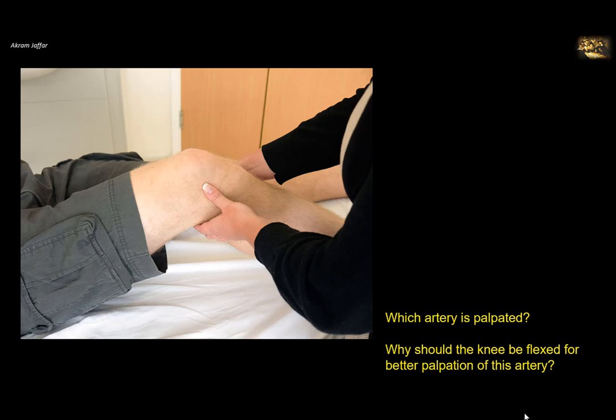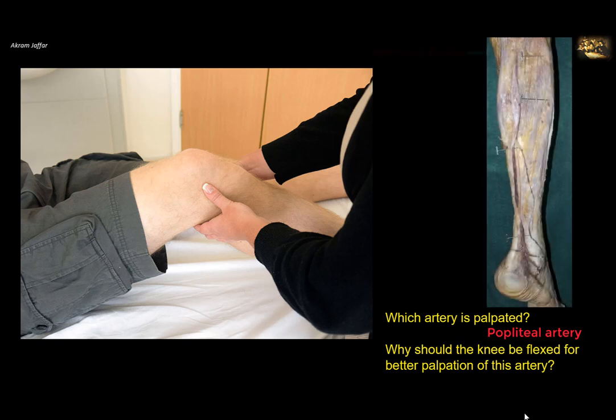Which artery is palpated here? This is the region of the popliteal fossa, which is located behind the knee joint, and the artery being palpated is the popliteal artery. As you can see, the knee is flexed because the popliteal fossa has a very thick fascial covering — the popliteal fascia — and in order to release tension on this fascia, the knee should be flexed. This is one reason.